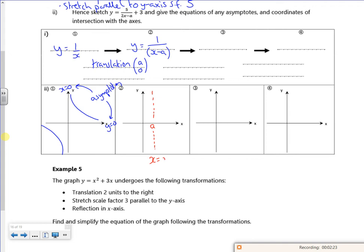So my new asymptote here is x equals a. That graph is the same but that one crosses through now at, if I put x is equal to zero, it's minus one over a. So if I put x is equal to zero in this equation number two, I get minus one over a.